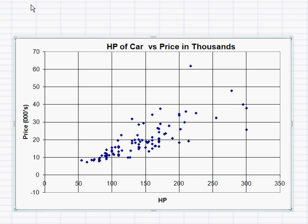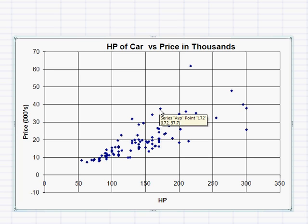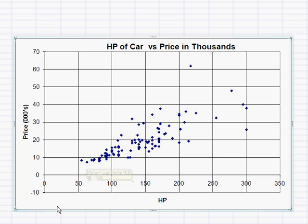What we usually start with is the idea of looking at a scatterplot. Here we have a scatterplot with two variables: horsepower of a car on the x-axis and the price of a car in thousands on the y-axis. For any given point, say this one, the coordinates are 172 horsepower and $37,700 for this particular car. Over here are cars with lower horsepower — 63 horsepower and $7,400. This data is from 1993, so some prices may differ from what you'd see today.